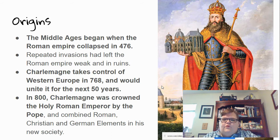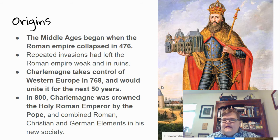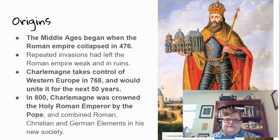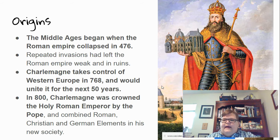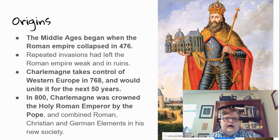The Middle Ages began when the Roman Empire collapsed in 476. The Roman Empire had been under a lot of attacks and invaded quite often, which left the empire weak and in ruins. A king named Charlemagne took control of Western Europe in 768 and would unite it for the next 50 years. In 800, he was crowned the Holy Roman Emperor by the Pope, and under his leadership he combined Roman, Christian, and German elements in his society. If you need to pause this video to take a note, please do so now.